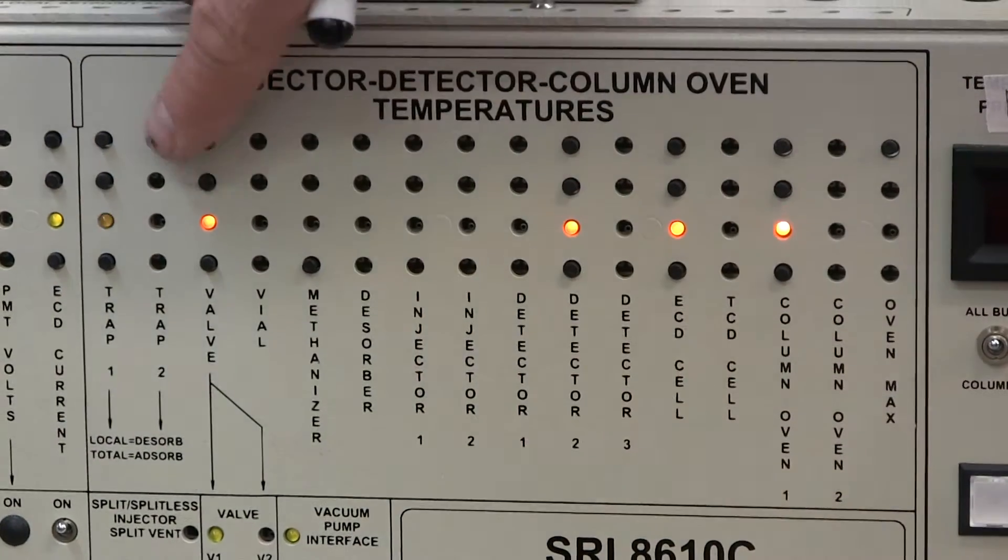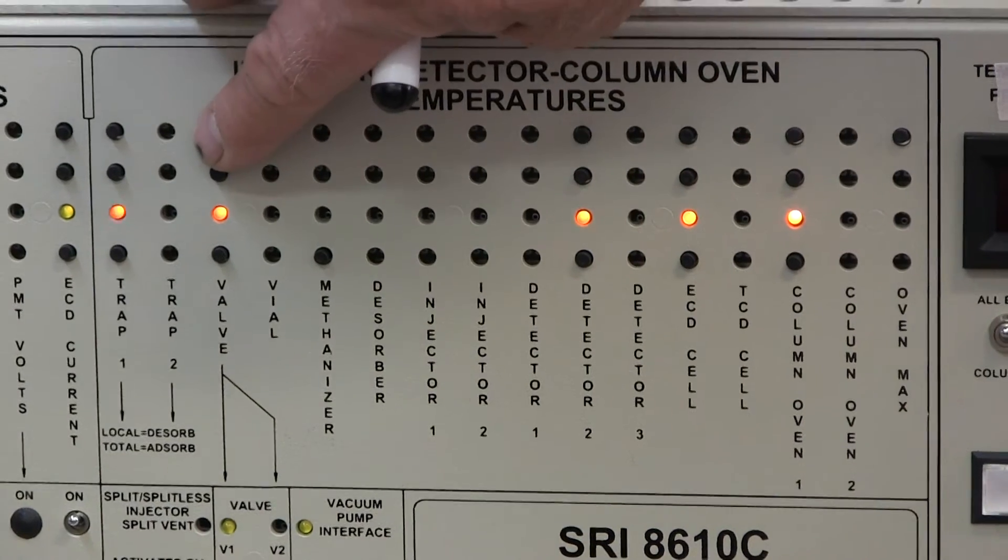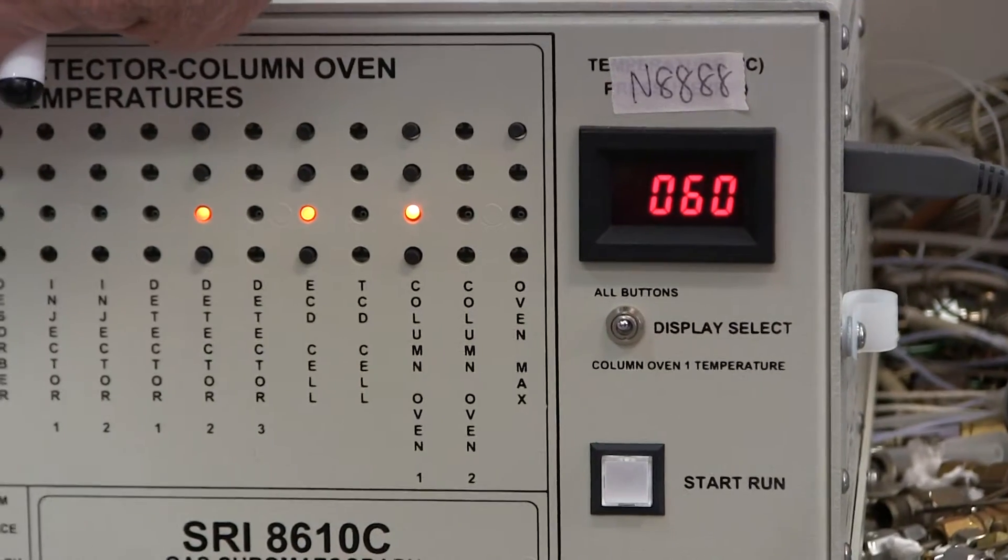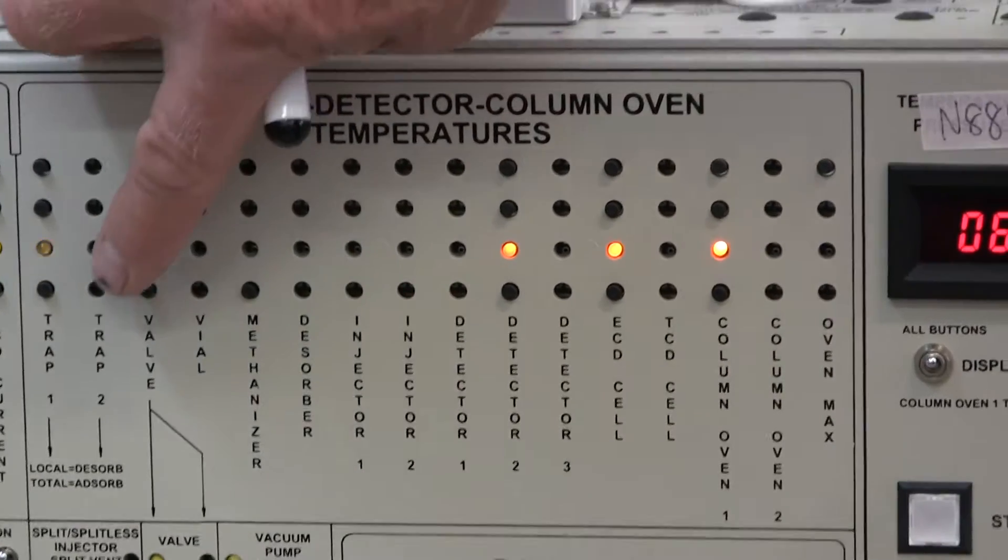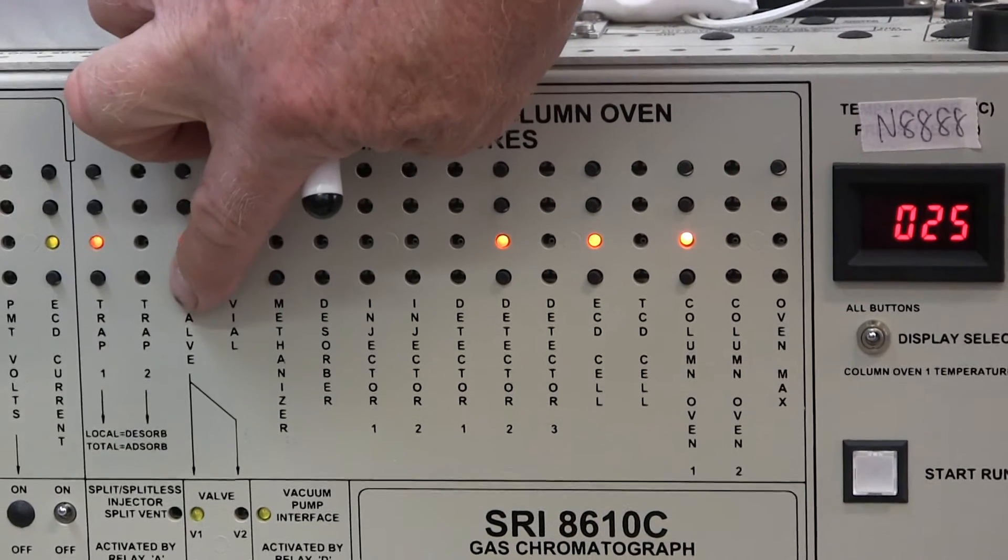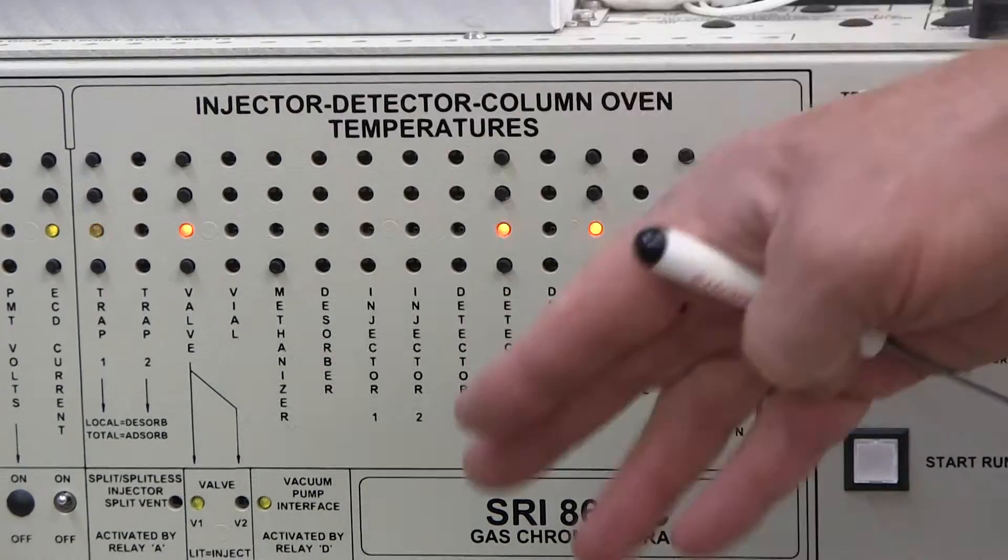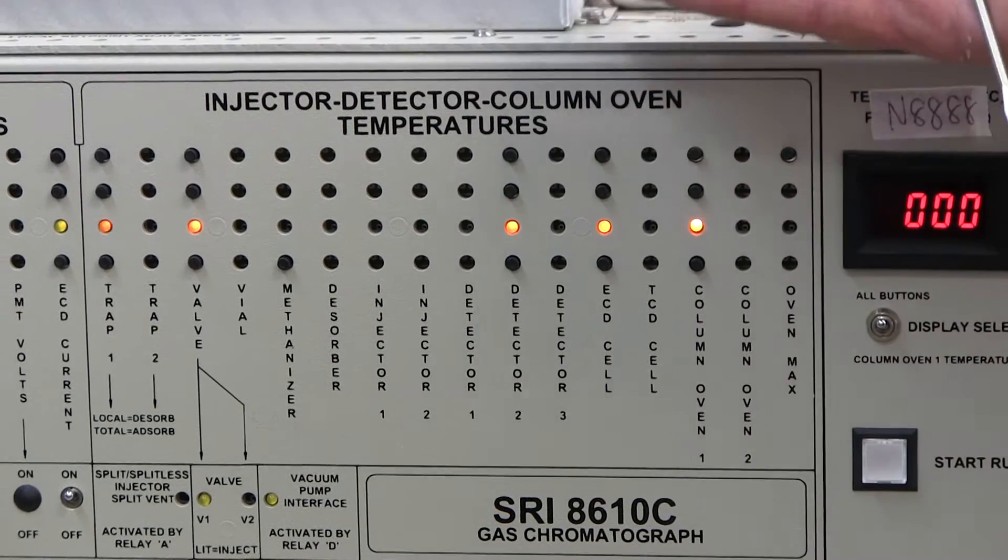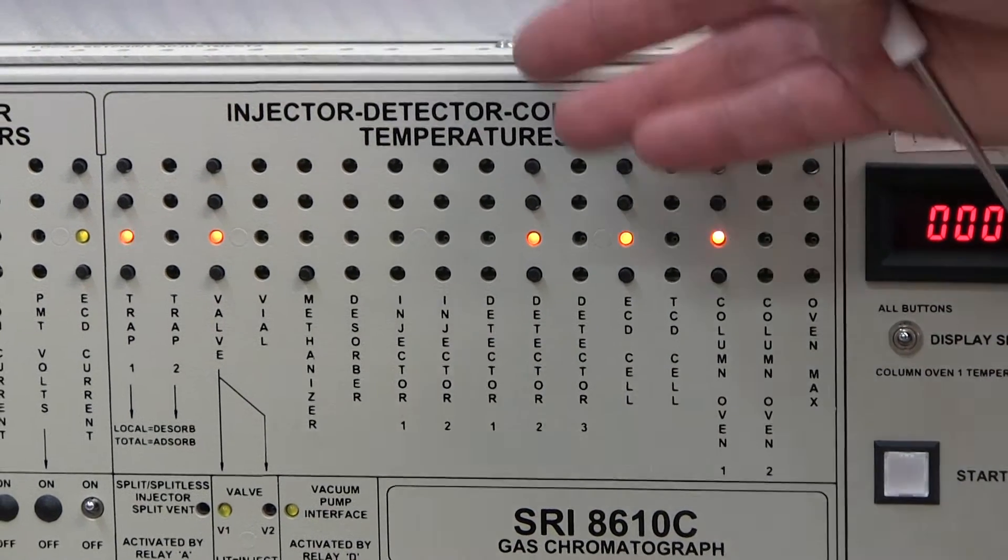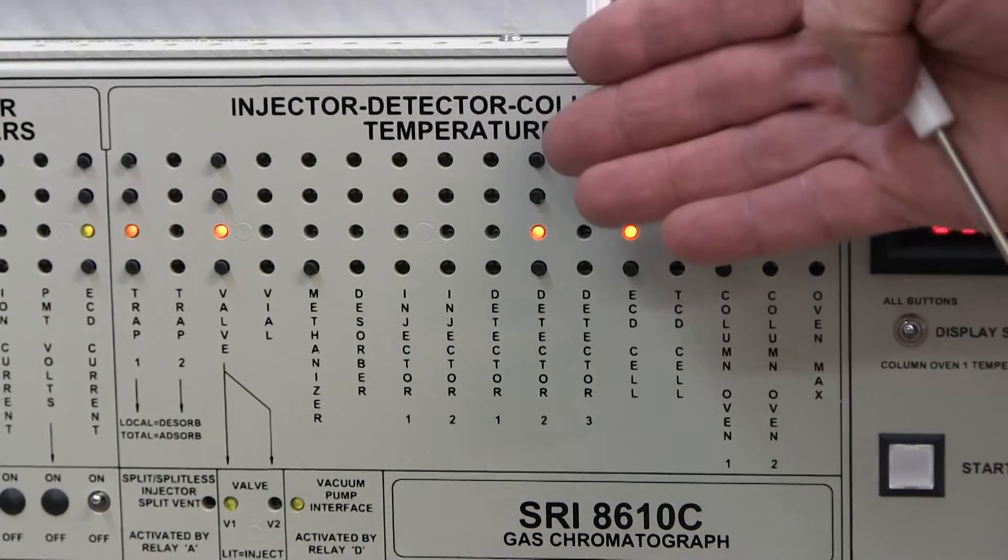For instance, the valve temperature. If I push the top button, it tells me what the set point is, in this case 60 degrees centigrade. If I push the bottom button, it shows me what the actual is, in this case 25 degrees centigrade. So it's in the process of heating up. It's not really at its set point. But that's how you know when things are working correctly.